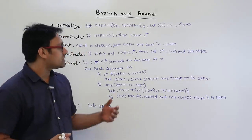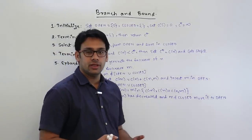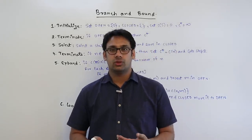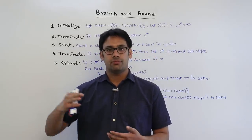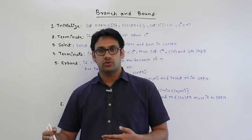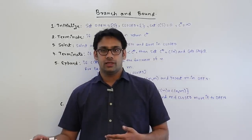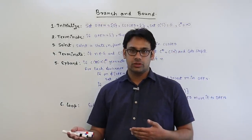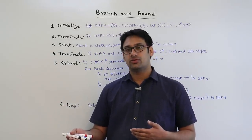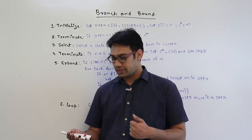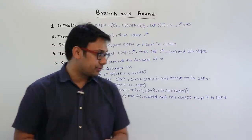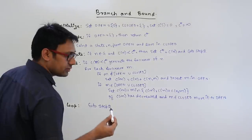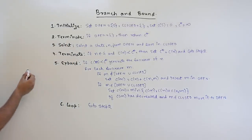In branch and bound, the main concept is: when you want to solve a certain kind of problem, you know the maximum bound up to which you have to go to find the solution. You put a restriction — a bound — so that you search only up to that location. Let me explain with an example, assuming we have a graph.